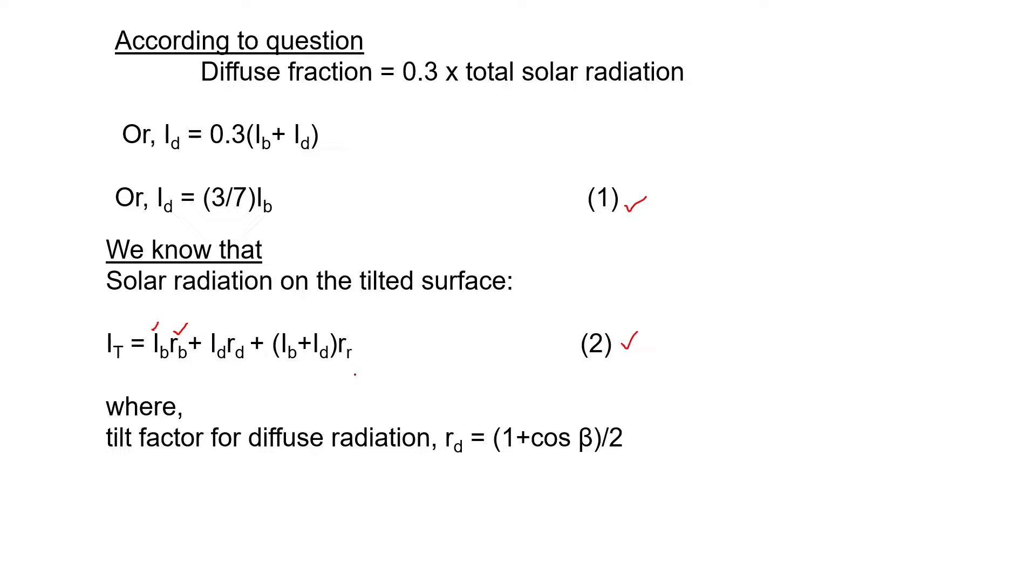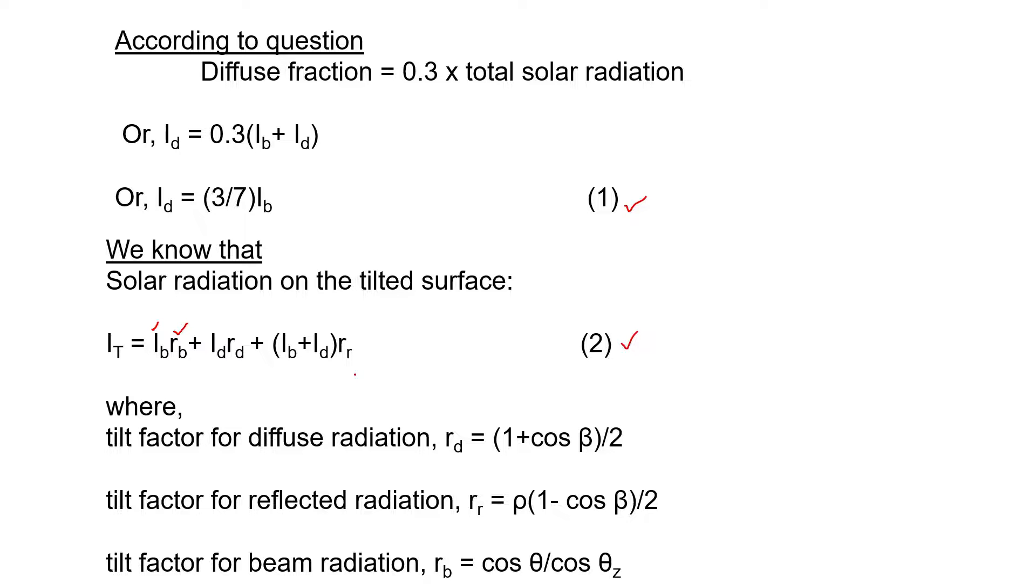The tilt factor for diffuse radiation Rd is given by (1 plus cos beta)/2. Tilt factor for reflected radiation Rr is given by rho times (1 minus cos beta)/2. And the tilt factor for beam radiation Rb is given by cos theta upon cos theta z.